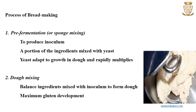The first stage in the process of bread making is pre-fermentation or sponge mixing. This is to produce the inoculum. A portion of the ingredients is mixed with yeast with or without flour to produce an inoculum. During this process, the yeast becomes adapted to the growth conditions of the dough and it rapidly multiplies.